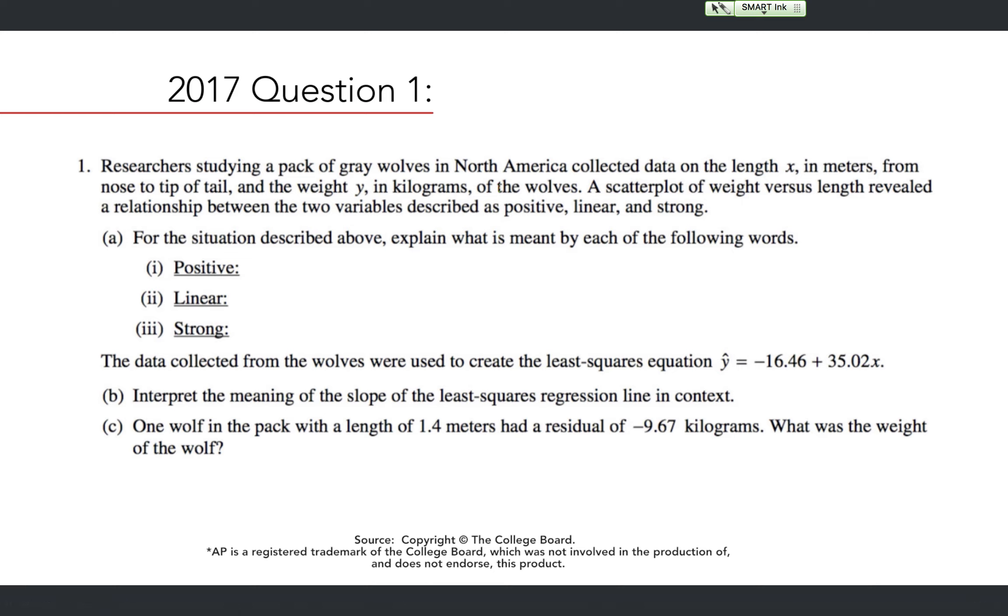Researchers studying a pack of gray wolves in North America collected data on the length x in meters from the nose to tip of tail and the weight y in kilograms of the wolves. A scatter plot of weight versus length revealed a relationship between the two variables described as positive, linear, and strong. For the situation described above, explain what is meant by each of the following words: positive, linear, and strong.